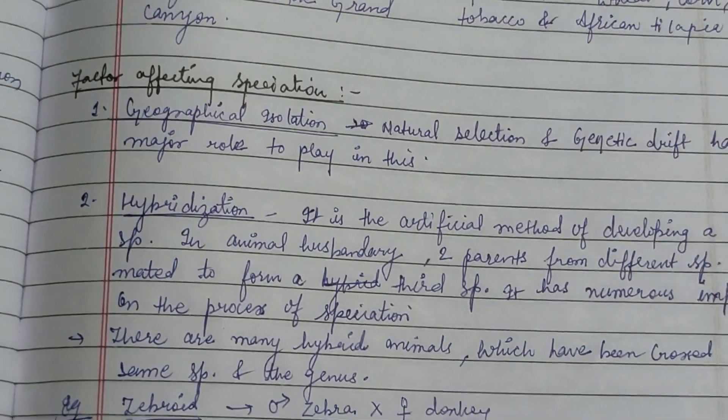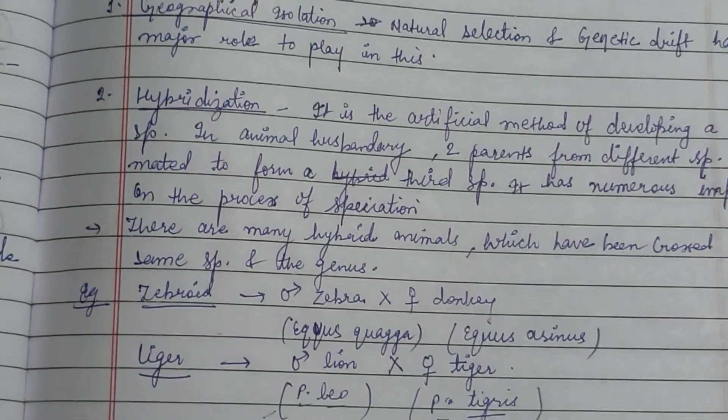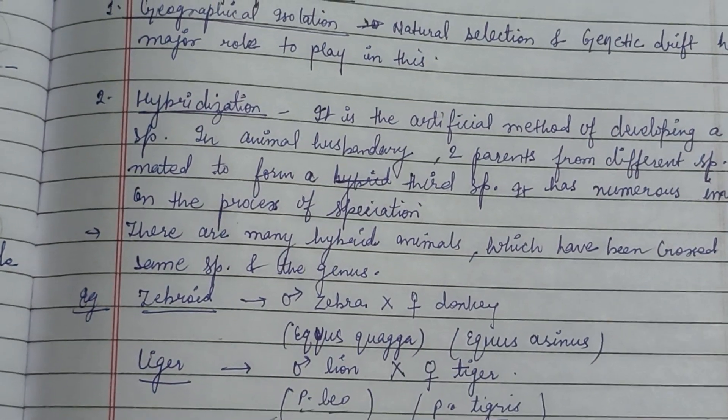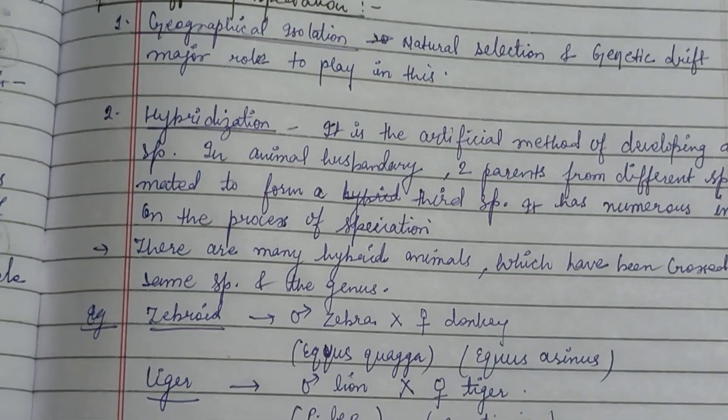Factors affecting speciation include geographical isolation and hybridization. That's all about speciation and its types. Keep watching — thank you.